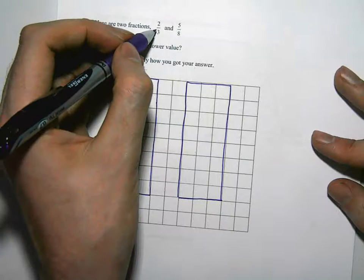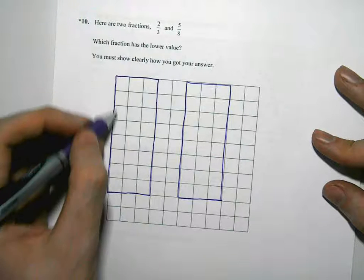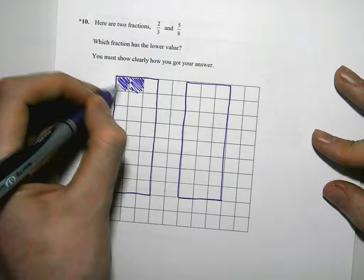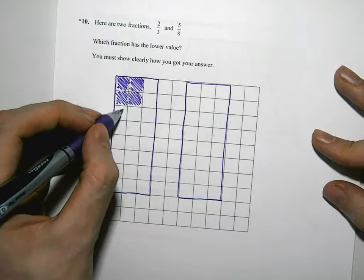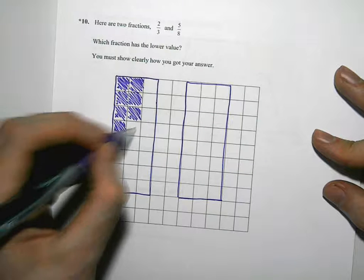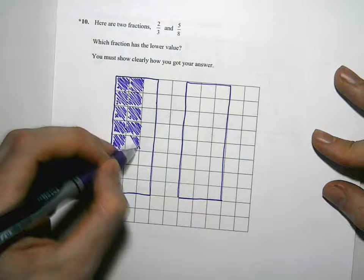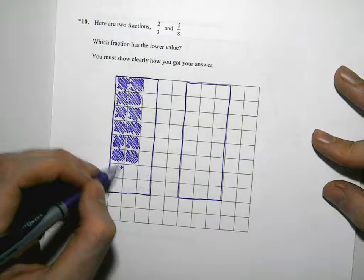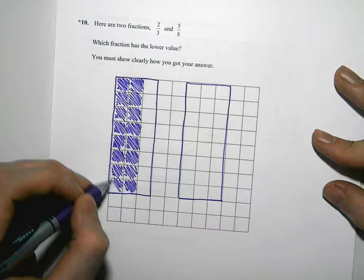Okay, so 2 thirds. So what we're going to do is, for every 3, we're going to colour in 2 of them. Because that's 2 thirds, 2 out of 3 that means. So for every 3, we're going to colour in 2 and leave the other one blank. So colour in 2, leave the other one blank. Colour in 2, leave the other one blank. Colour in 2, leave the other one blank. Keep going like this to the end.